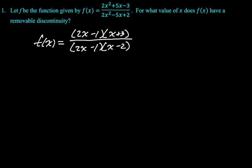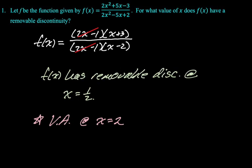So removal discontinuity is a factor of the denominator that cancels with the numerator. And you can see 2x minus 1 does, which means we have a removal discontinuity at x equals 1 half. I just wanted to address the fact there is a vertical asymptote at x equals 2. It's not the question here. But if the problem had said list the vertical asymptotes, x equals 2 would be the only answer. x equals 1 half is not a vertical asymptote. It's only a removal discontinuity.